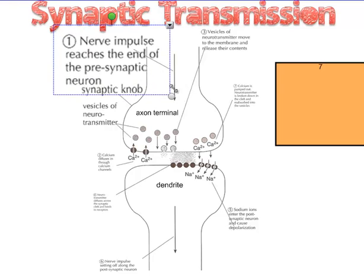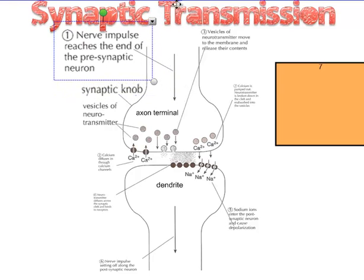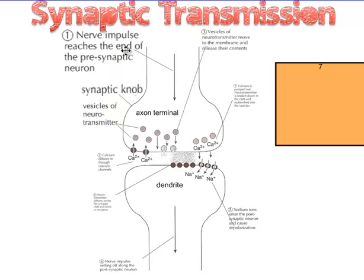Step one: the nerve impulse is going to reach the end of the presynaptic neuron. This wave of sodium rushing in is coming down the axon — it's not going backwards. So the nerve impulse reaches the end of this presynaptic neuron. Presynaptic neuron just means this is the part of the neuron that's before the synapse.